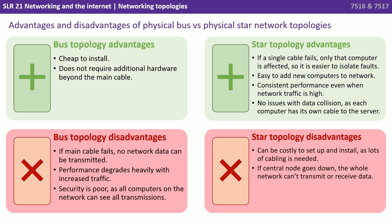With the star topology, if a single cable fails, only that computer is affected, so it's easier to isolate faults. It's easier to add and remove computers to and from the network. You have consistent performance even when network traffic is high, and there are no issues with data collision, as each computer has its own dedicated cable. However, it can be costly to set up and install as there's lots of cabling required, and if the central node goes down, the whole network can't transmit or receive data.